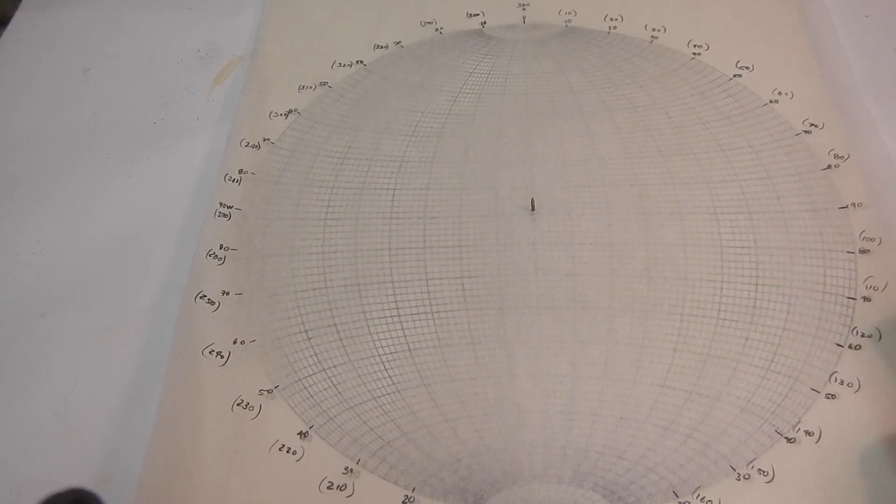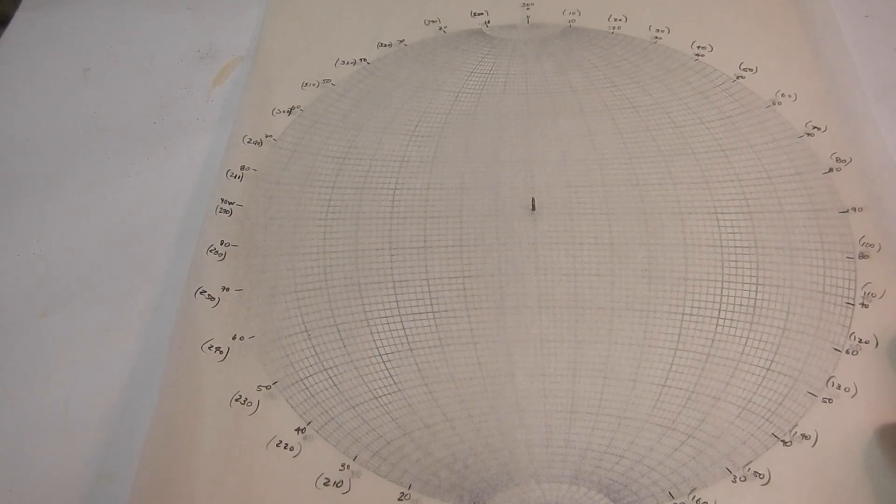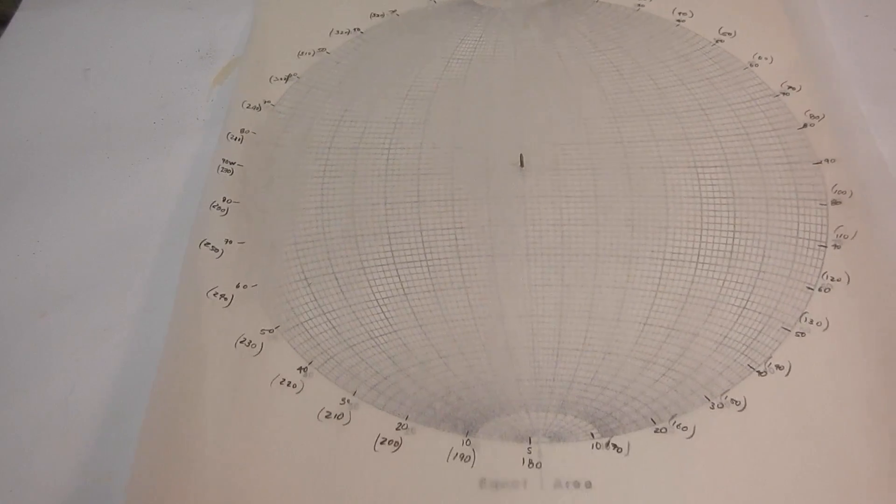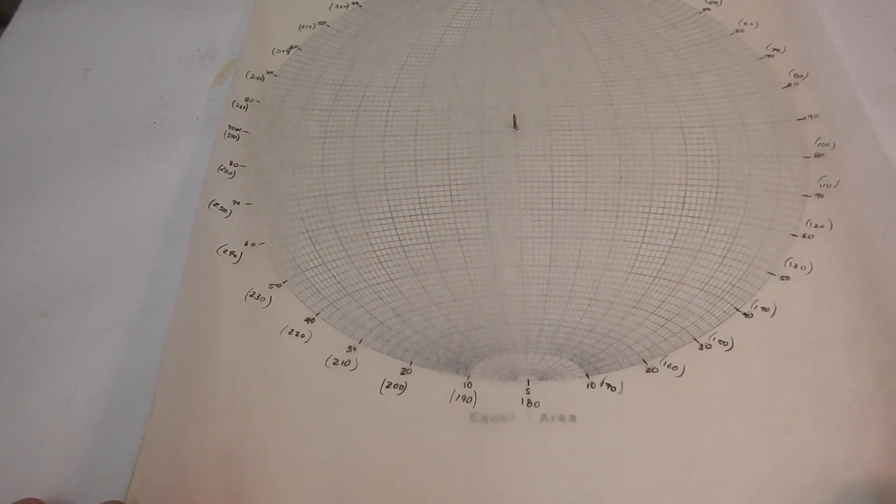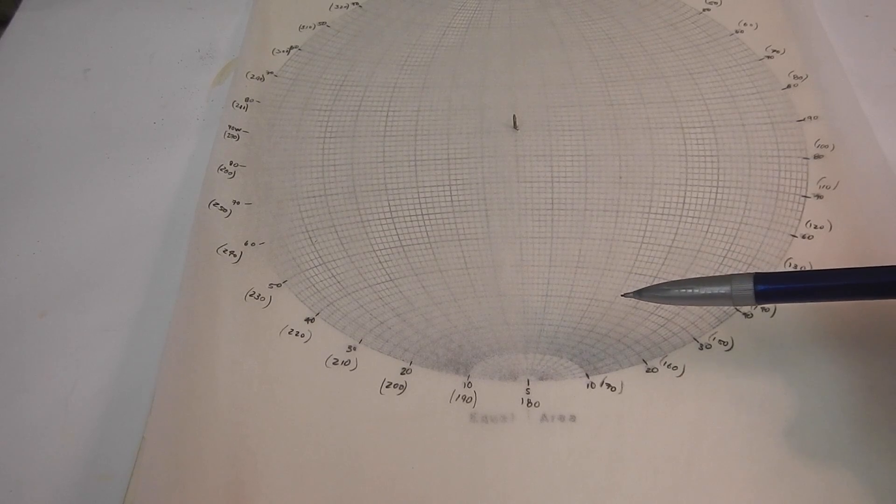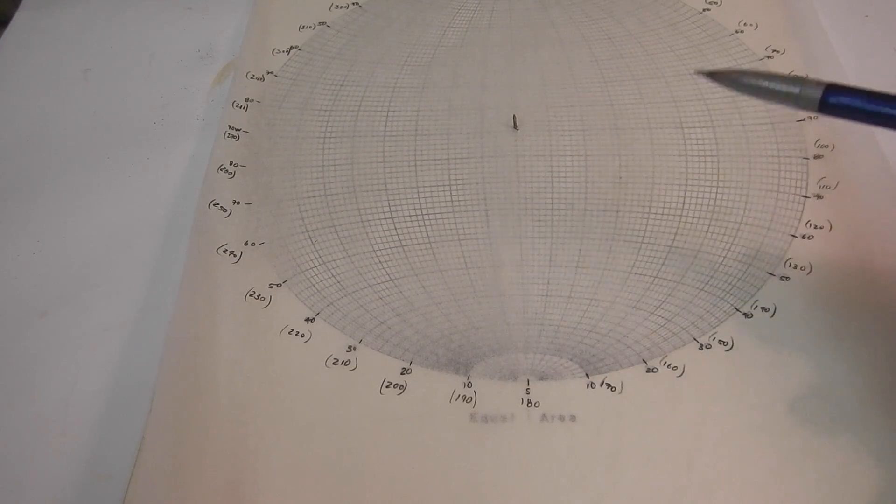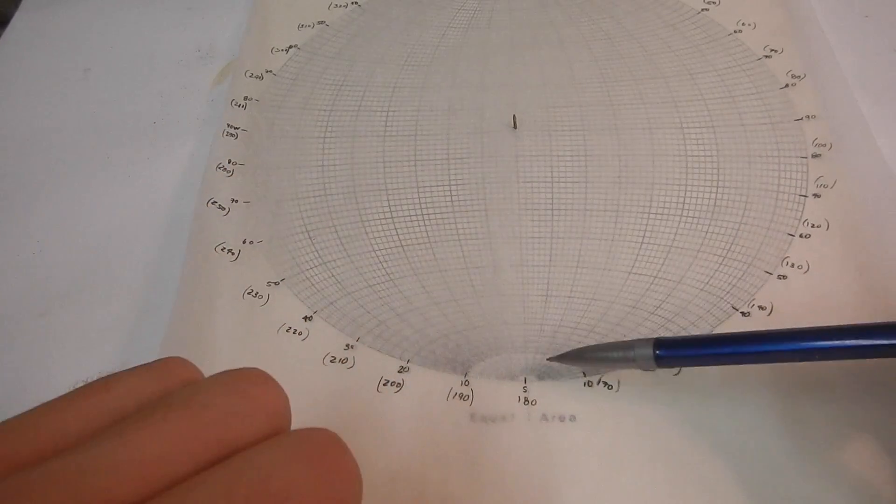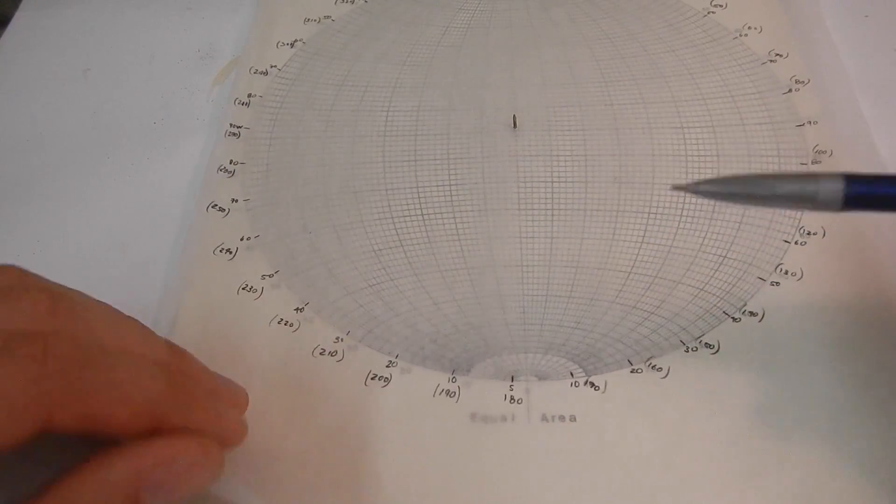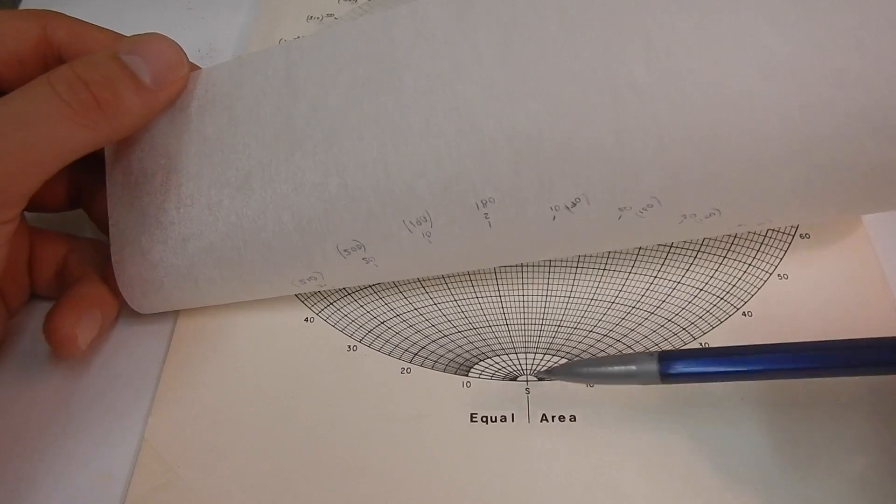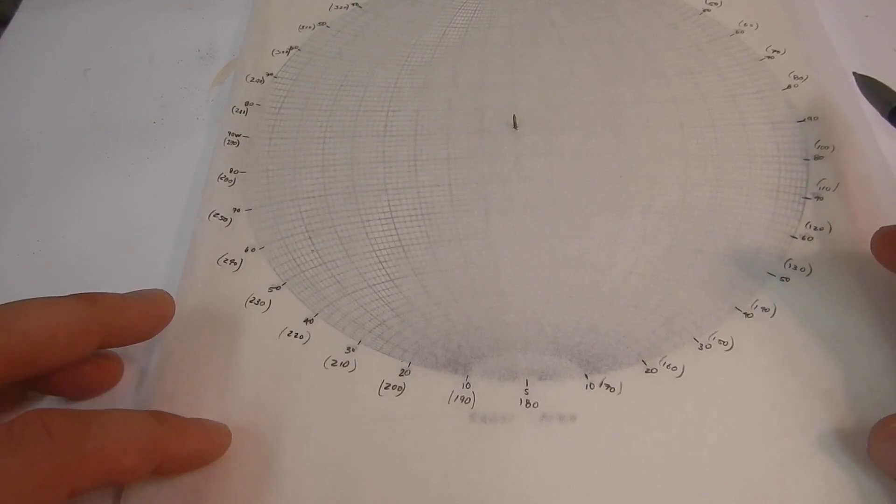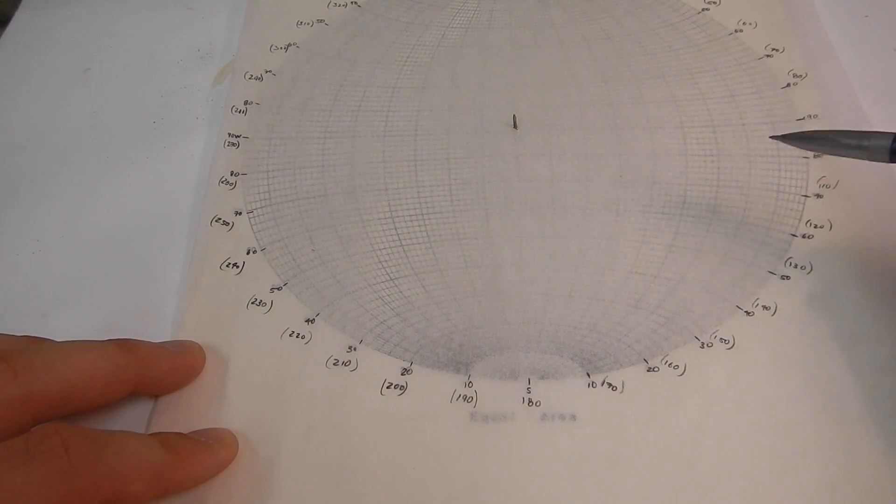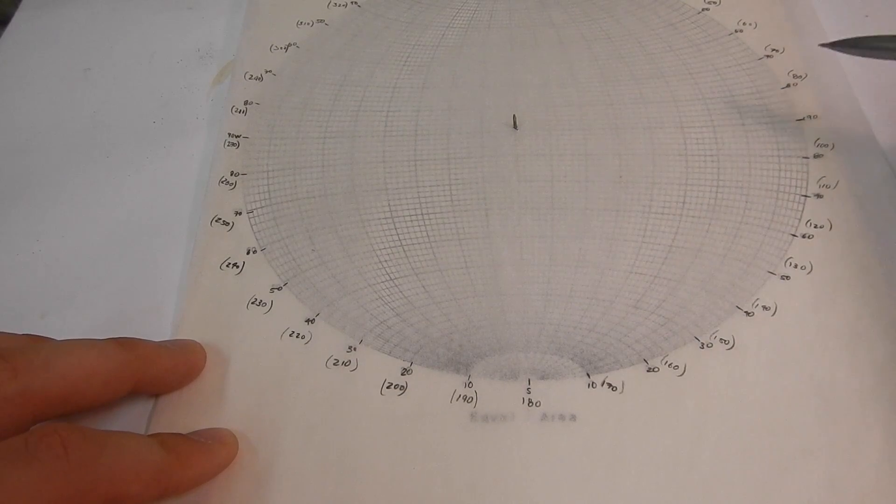The first thing you should do is on your tracing paper, we'll just look at the south here, is you're going to mark your north, south, east and west first so you'll draw a little line here, I draw a tick where south is on the stereonet so it lines up